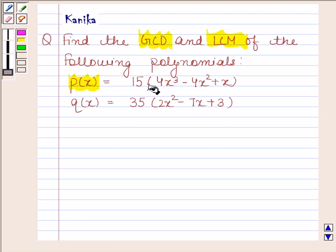P(x) is equal to 15 into 4x cube minus 4x squared plus x, and Q(x) is equal to 35 into 2x squared minus 7x plus 3.